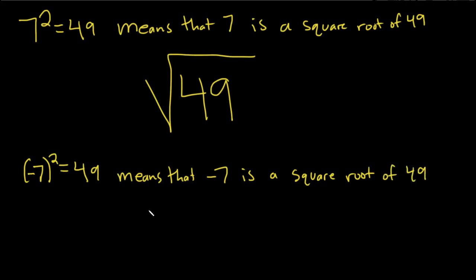So 49 actually has two square roots, 7 and negative 7. These are both square roots of 49. So which one do we want?